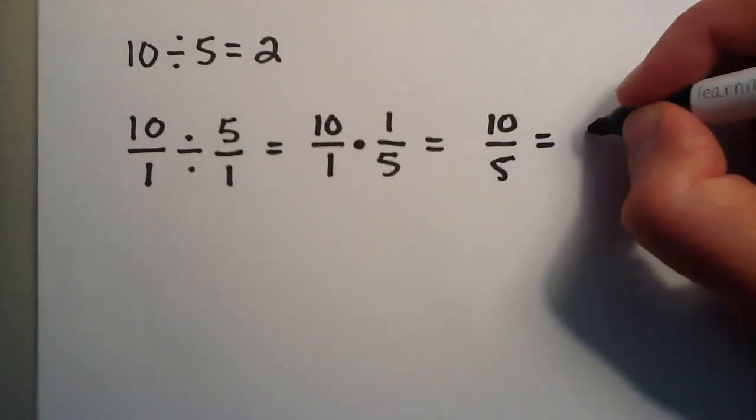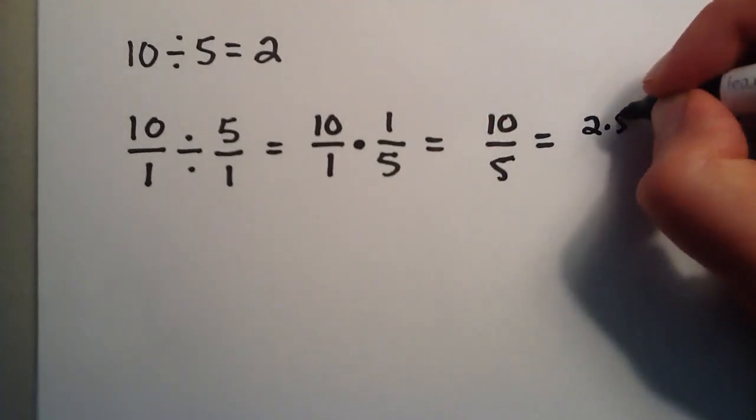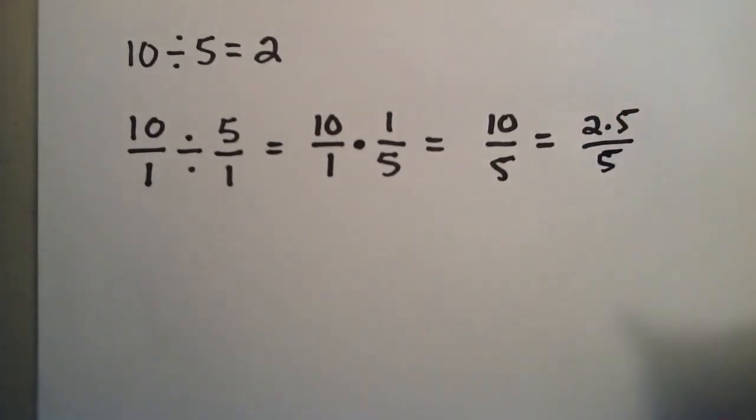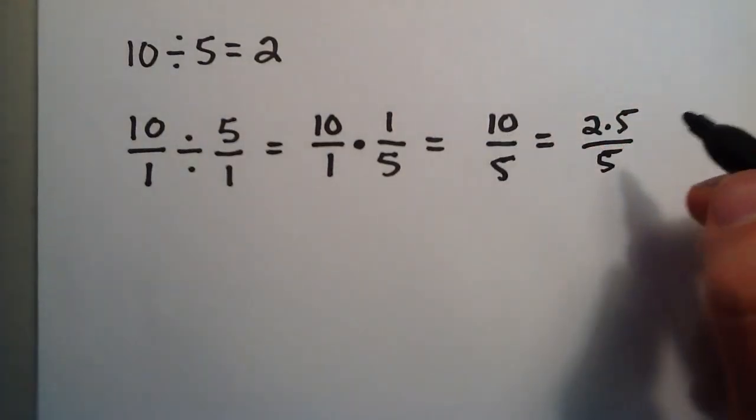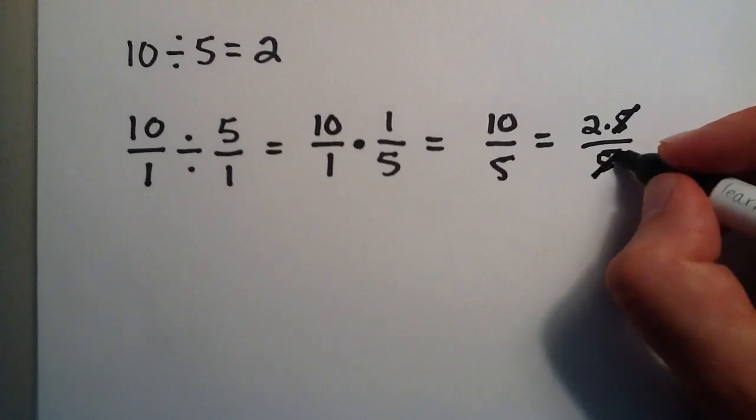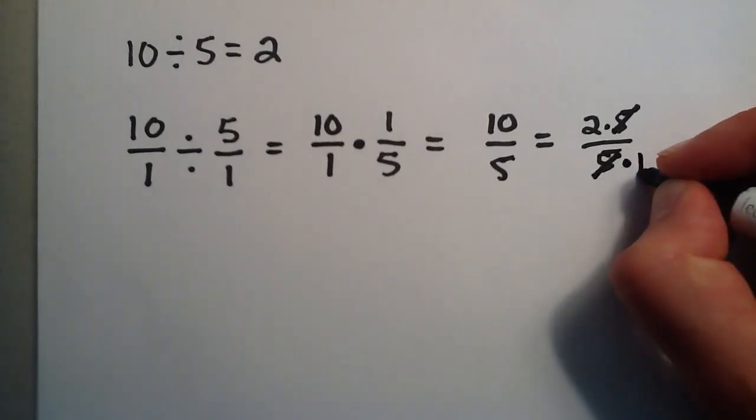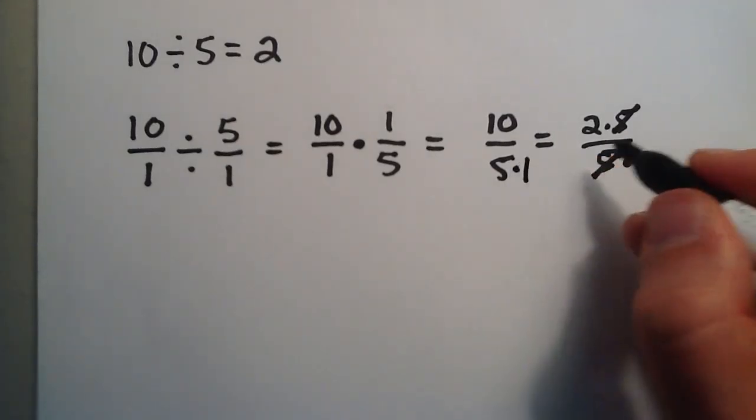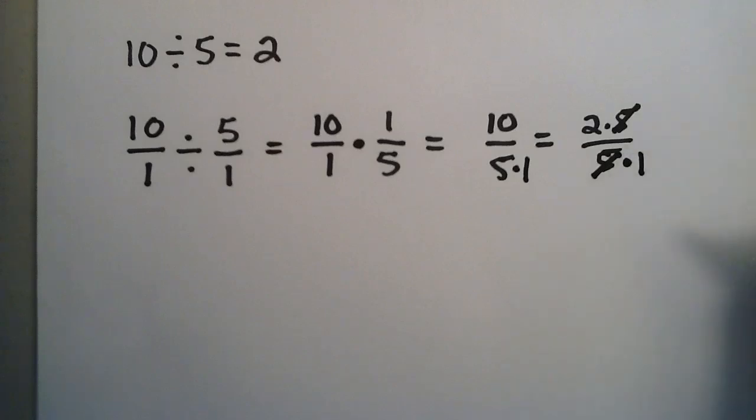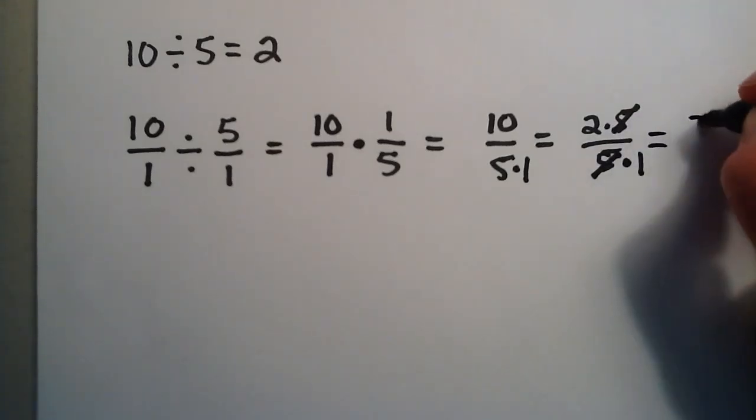But we can also write this as 2 times 5 over 5. So 2 times 5 equals 10, and then the 5 over 5 really just gives us 1. And don't forget your 1 here. This is really 1 times 5 if we want to be technical. And this just becomes 2 over 1.